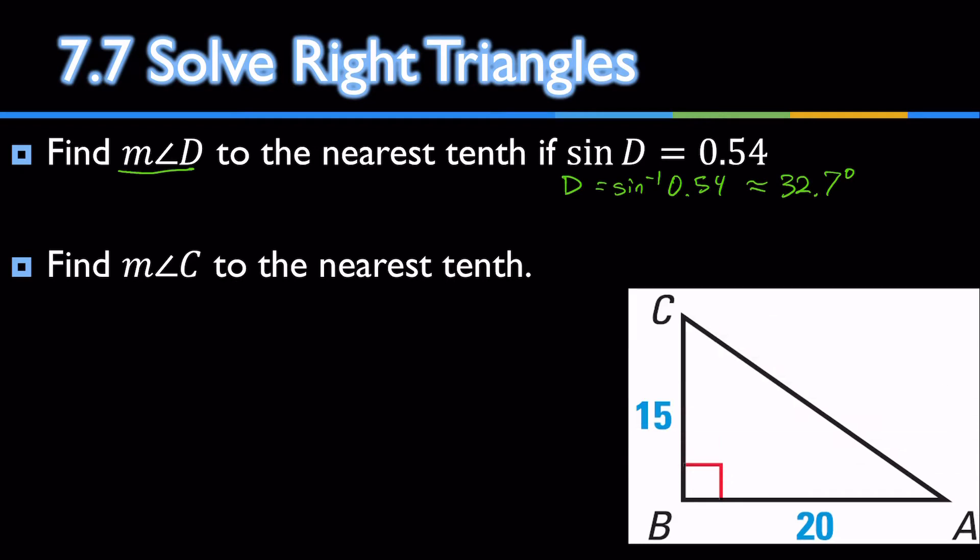Let's try another one. Find the measure of angle C. Again, we're looking for an angle, so we'll use an inverse. There's my angle I'm looking for, C. What do we have? We have an opposite, 20 is opposite. And we have an adjacent, the 15 is adjacent. Opposite and adjacent. Is that sine, cosine, or tangent? That's right. It's tangent.